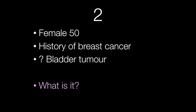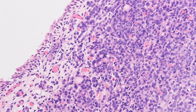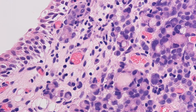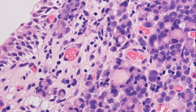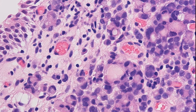The second case is a female of 50 with a history of breast cancer. She was found to have a lesion, query bladder tumour. What is it? Here is a low power view. Have a look at the urothelium — do you think it's normal? Here is a high power view which should enable you to make the diagnosis.